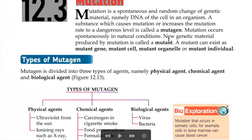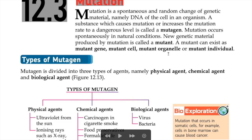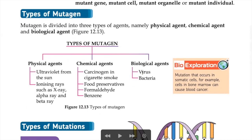Mutation occurs spontaneously in natural conditions. A new genetic material produced by mutation is called a mutant. When something is exposed to mutation, a new product will be formed — that new product we call a mutant. A mutant can exist as a mutant gene, mutant cell, mutant organelle, and even a mutant individual.